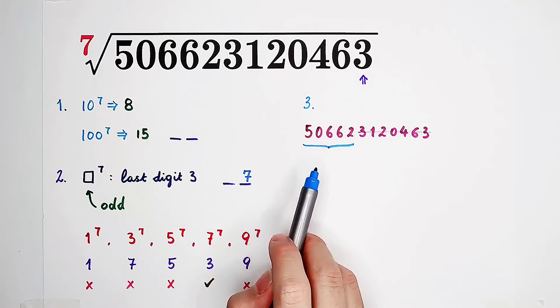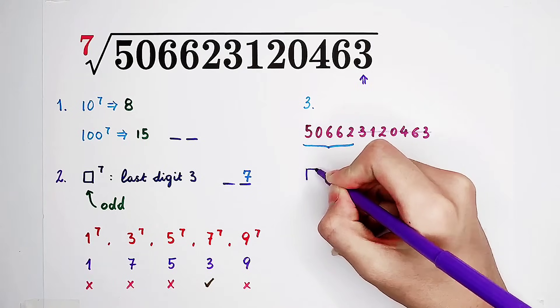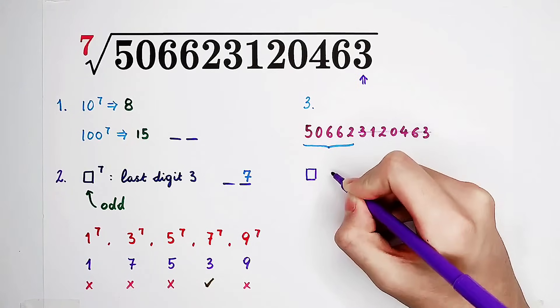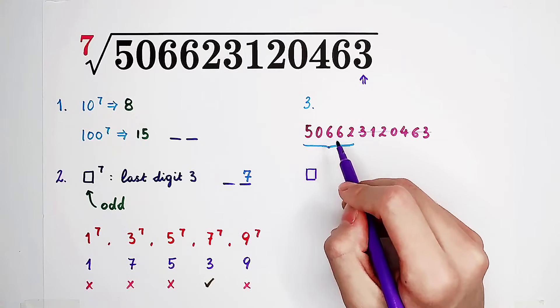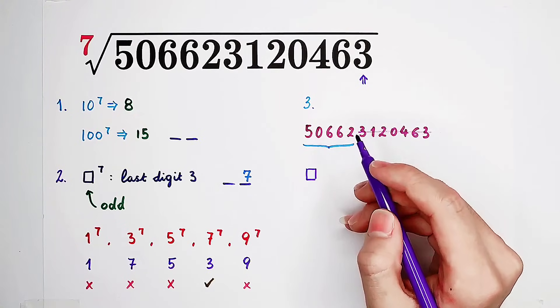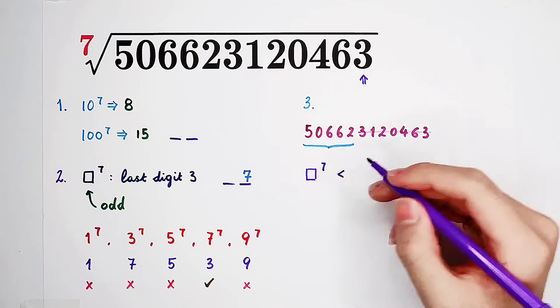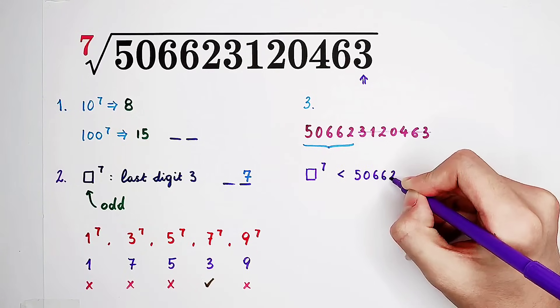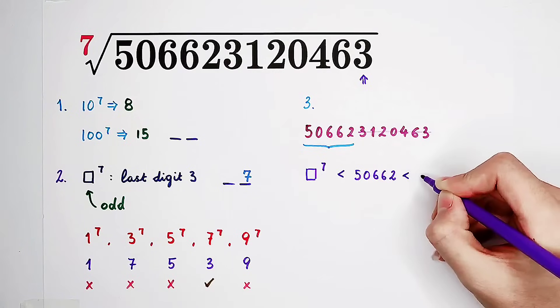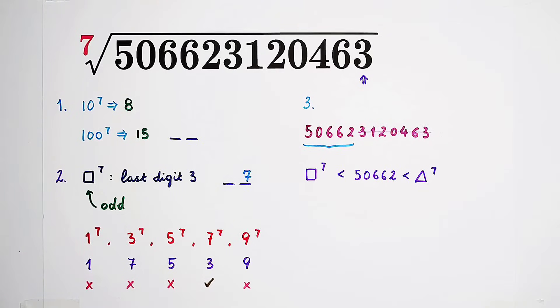50662. Then, I have to find two numbers, actually. And this number, 50662, should be between the 7th power of these two numbers.